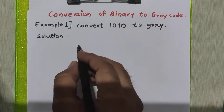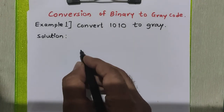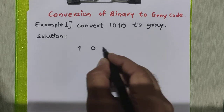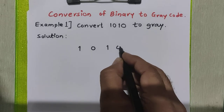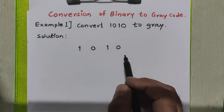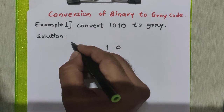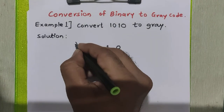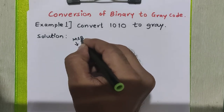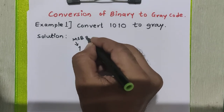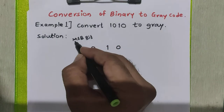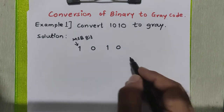I will write the given binary number here as it is. The given binary number is 1010. This is the MSB bit — the most significant bit of this binary number.